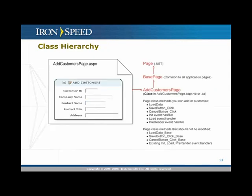Now let's look at what we generate at each class. For something like an add customers page, this page does not stand alone — it derives from the .NET page class, inheriting all of the functionality available there. We also have intermediate classes called a base page and a base application page. These exist because they add additional functionality available across your entire application, and they give you an opportunity to make application-wide modifications at the base page or base application page level when needed.